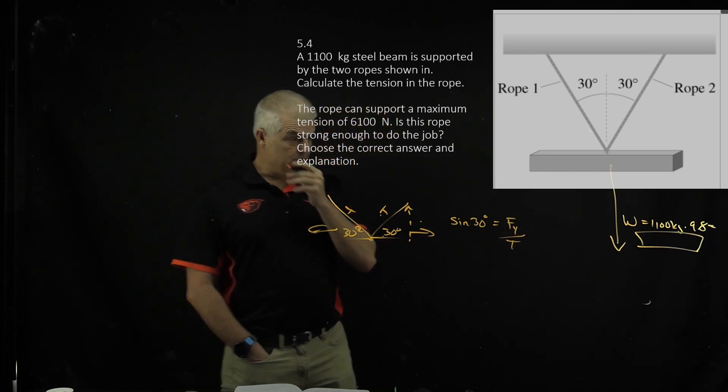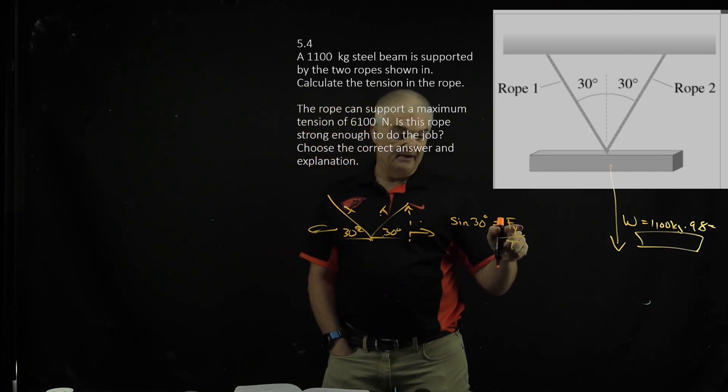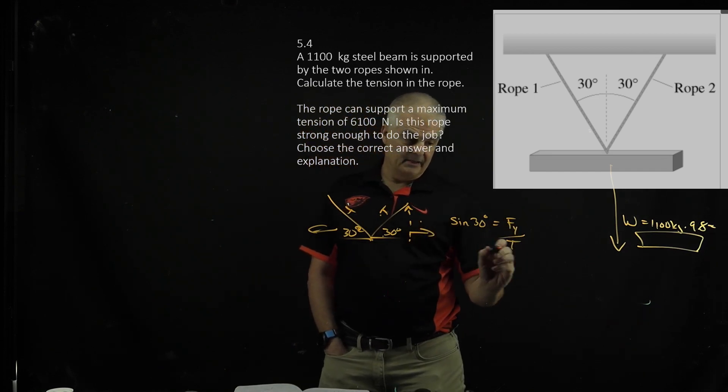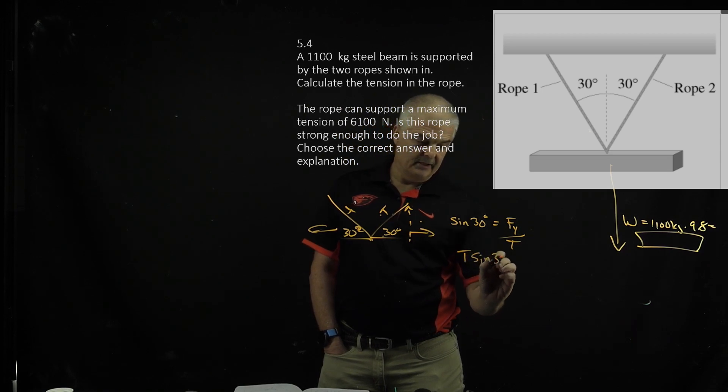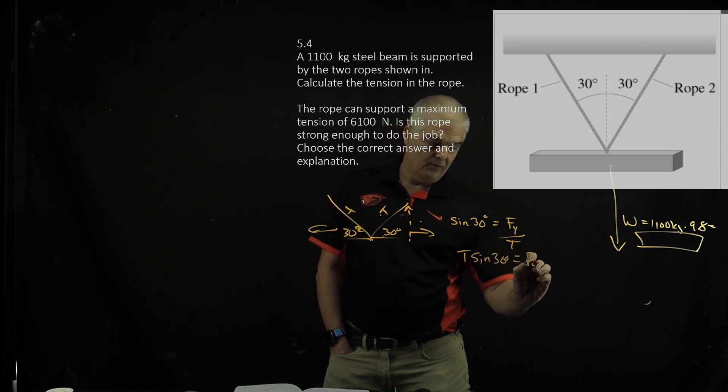And so what I want to do is I want to find the Fy, so I can just say, cross multiply, I can say T sine 30 equals Fy, right?